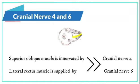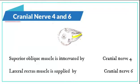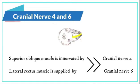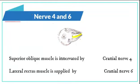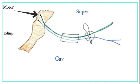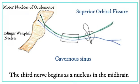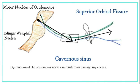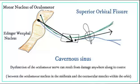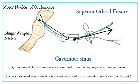On the other hand, the superior oblique muscle is innervated by cranial nerve 4, while the lateral rectus muscle is supplied by cranial nerve 6. The third nerve begins as a nucleus in the midbrain, and dysfunction of the oculomotor nerve can result from damage anywhere along its course between the oculomotor nucleus in the midbrain and the extraocular muscles within the orbit.